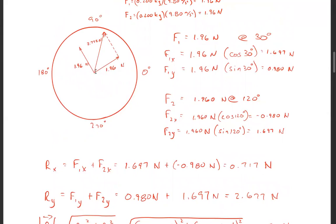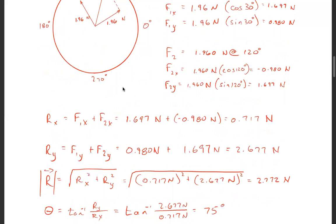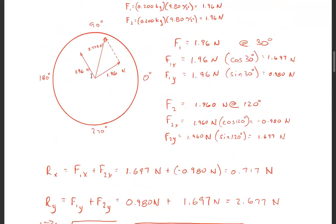Notice it's in the positive direction. Indeed you can see 0.717 is a little vector in this direction. That's the x component. The y component is 2.677, that's up here along the y-axis.